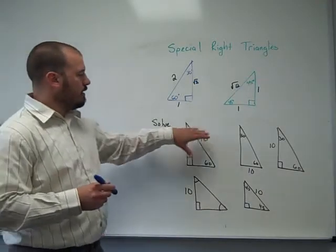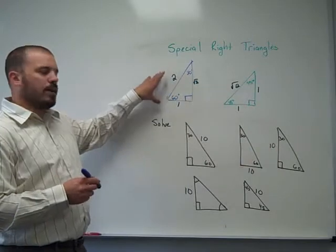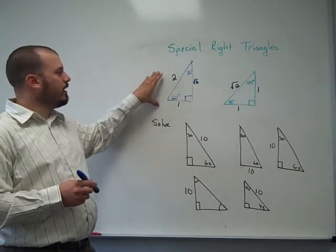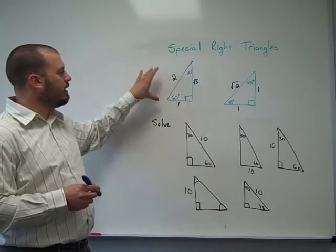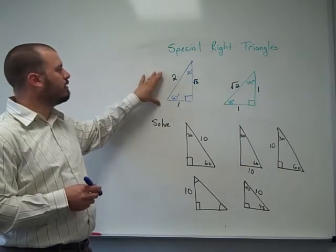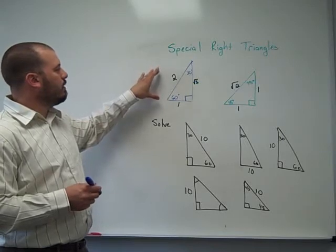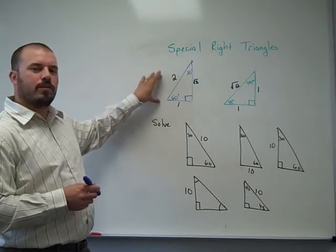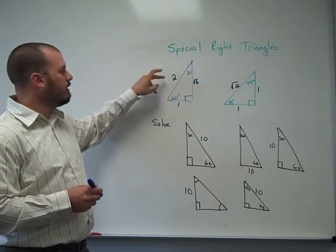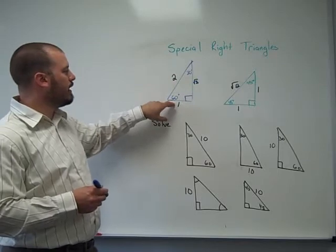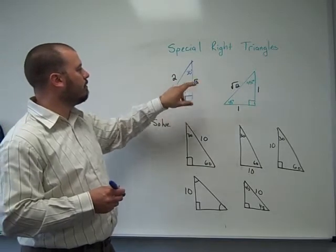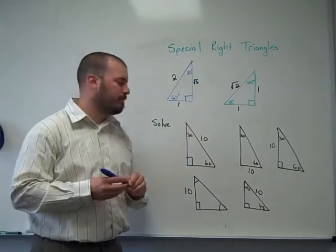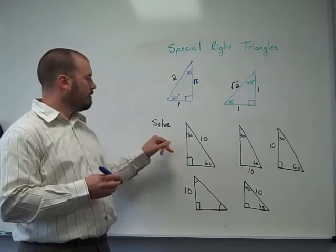For each of these three problems, I'm going to refer to our basic 30-60-90 triangle, which was explained in a previous video. The ratio of the sides is always going to be 2 for the hypotenuse, 1 for the side opposite of 30°, and √3 for the side opposite of 60°. I'm going to use that here.